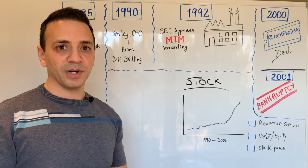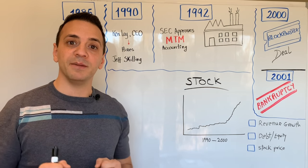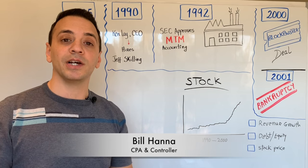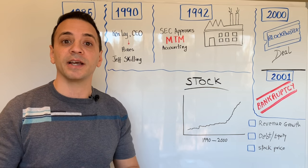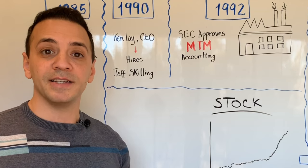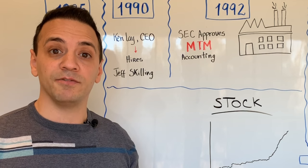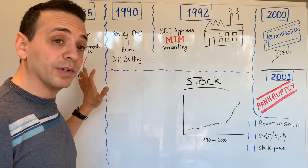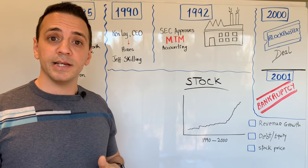Hey guys, welcome to another video by The Financial Controller. My name is Bill Hannah, and in this video I'd like to discuss another interview question that comes up in accounting and finance interviews — and that is the Enron bankruptcy and the fallout that followed. We will be going over the timeline of events as well as the accounting practices that Enron adopted that led to its demise.